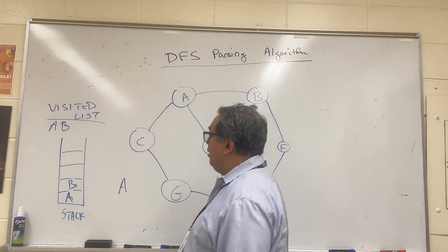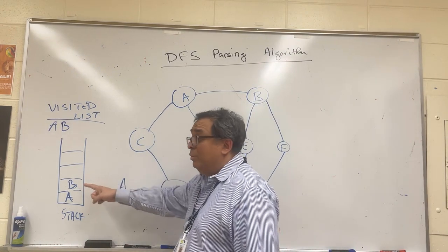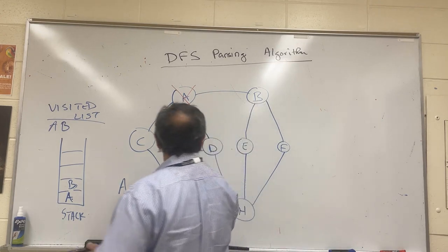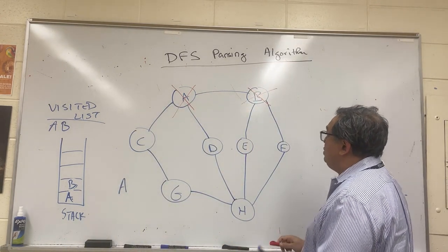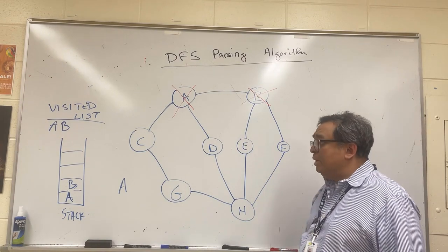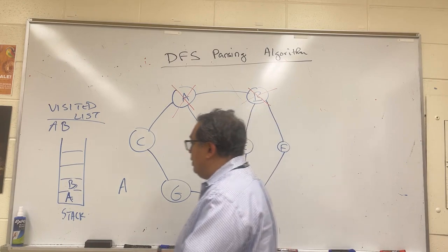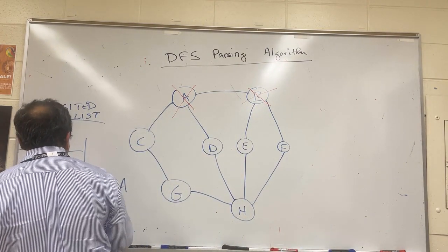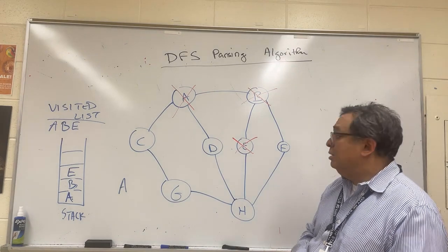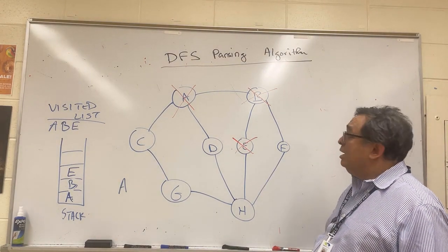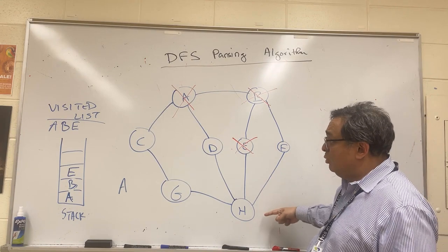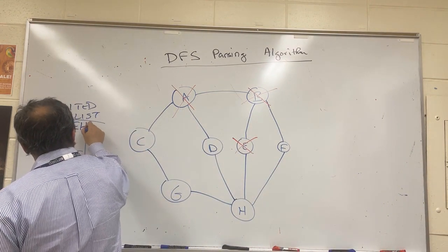We're now at node B. A has been visited, so we cross it out. B has been visited, so we cross it out too. We ask: are there any nodes from B that we have not yet visited? Yes — E and F. E comes earlier in the alphabet, so we push E onto the stack, mark it as visited, and move to node E. From E, B is already visited, so we look for others — there is H.